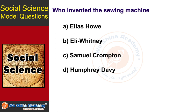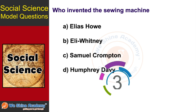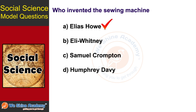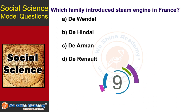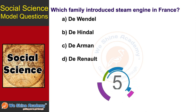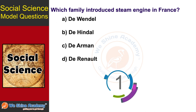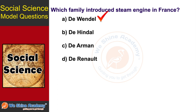The next question is: Who invented the spinning machine? The answer is Elias Howe. The next question is: Which family introduced silk weaving in France? The answer is the Jacquard family.